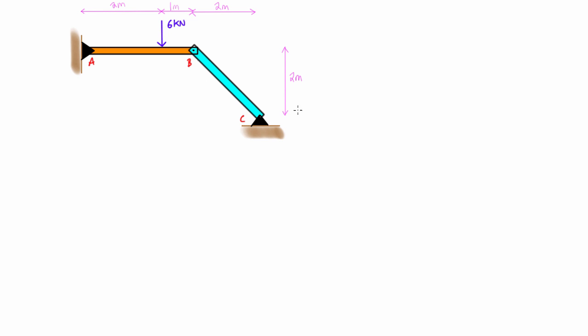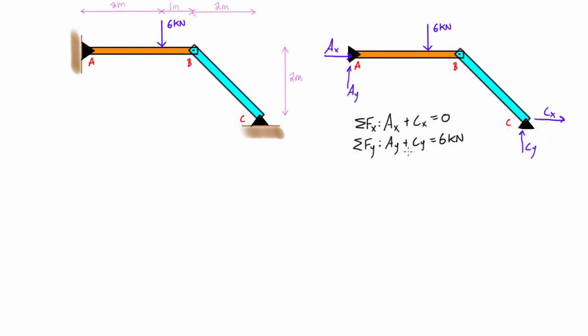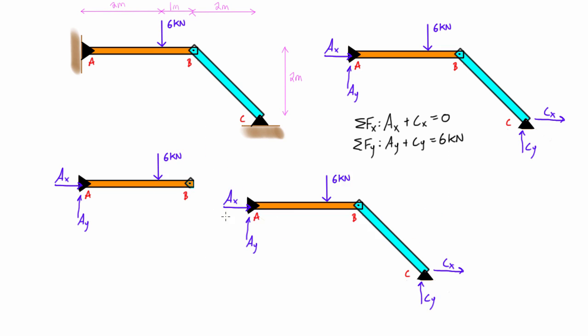So first of all, let's draw the free body diagram of the whole structure. From here we can get the sum of forces in the x-direction and the sum of forces in the y-direction. We could write an expression for the sum of moments about some point, but at this point it's not really going to help us. We can see here we have Ax plus Cx equals zero, Ay plus Cy is equal to 6 kN. We actually can't solve for any of these, there's too many unknowns, so what we have to do is draw the exploded diagram to get the individual free body diagrams for each member.